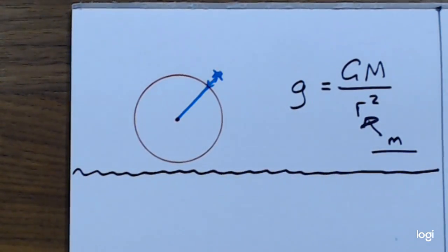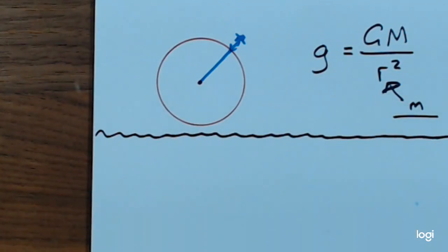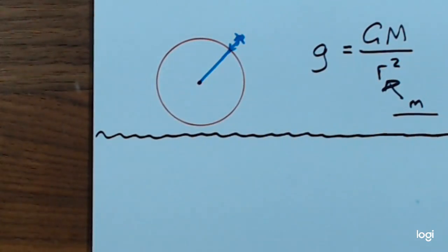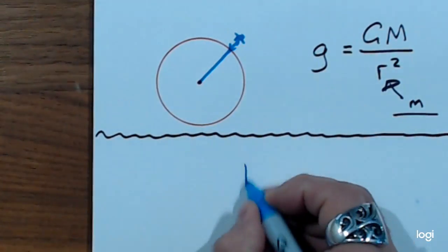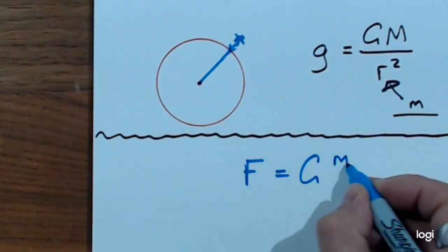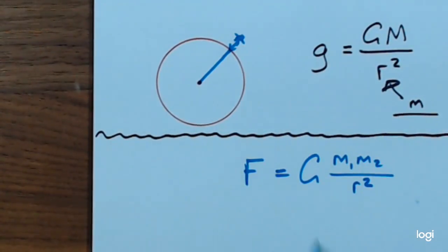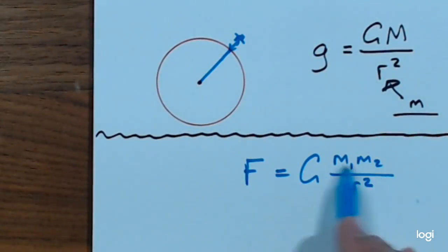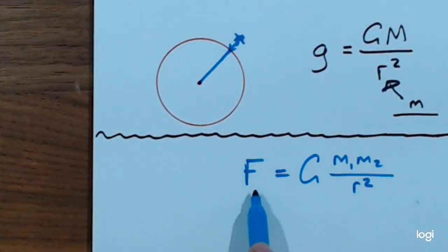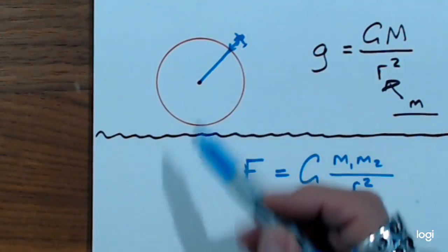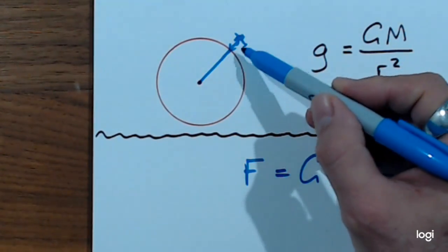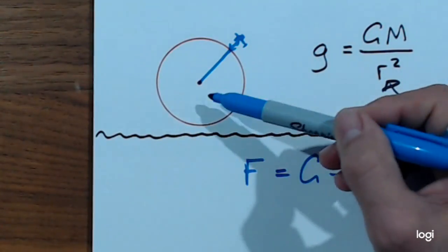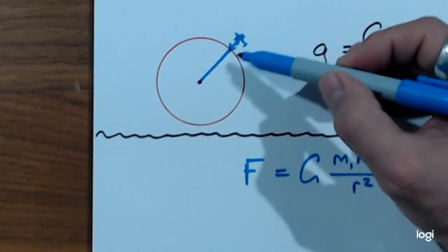Part C: determine the weight of the International Space Station at its position in orbit about the Earth. Weight is the force of something being attracted by another body. The gravitational force formula is Gm1m2 over r squared — this is if you know the mass of both bodies, and it's a mutual force. The Earth is attracting the satellite with that force and the satellite is attracting the Earth with that force.